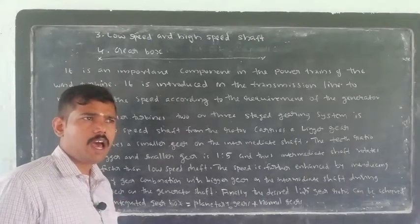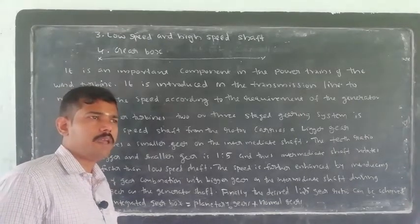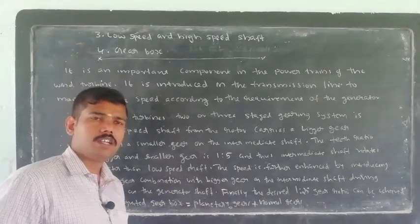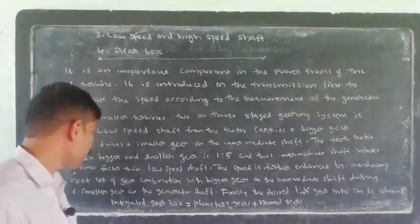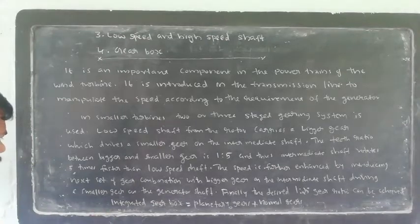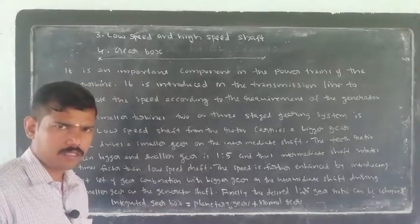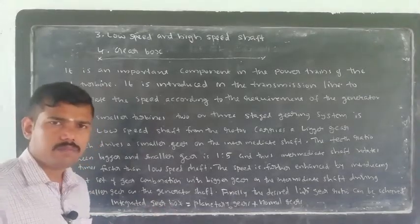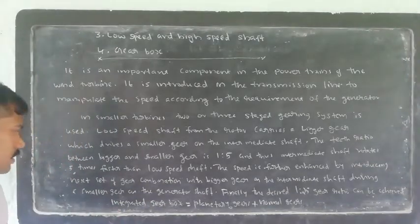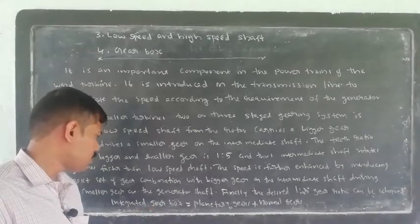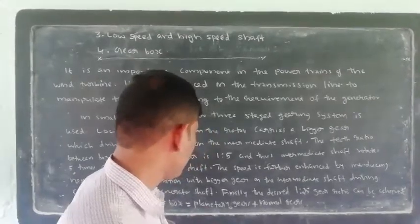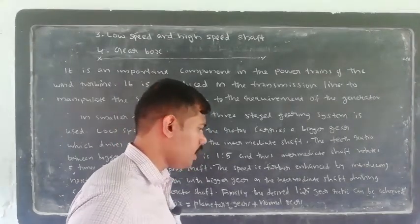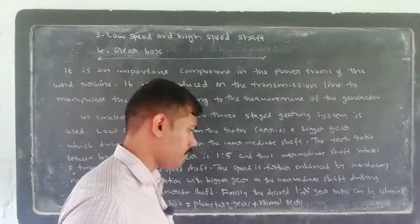Thus the intermediate shaft rotates 5 times faster than the low speed shaft. The speed is further enhanced by introducing the next set of gear combination, with a bigger gear on the intermediate shaft and a smaller gear on the generator shaft. The teeth ratio is 1 to 5. For large wind turbines, an integrated gearbox uses a combination of planetary gears and normal gears.